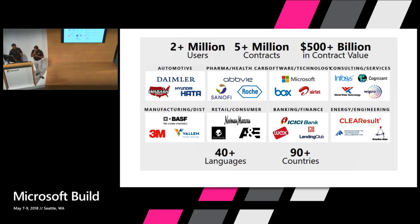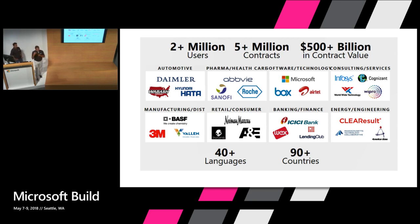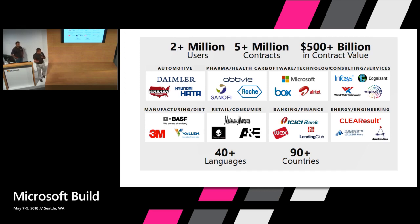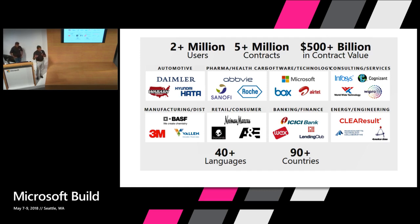We have a set of customers using our platform today, and contract management spans all industries and geographies — it's a common problem every enterprise deals with. We have over 5 million contracts and 2+ million users today. That number matters because the time it takes to create and negotiate those contracts can be huge — in certain companies it goes 90 to 120 days. The use case here is to show how we've used Microsoft Teams to reduce that cycle time.